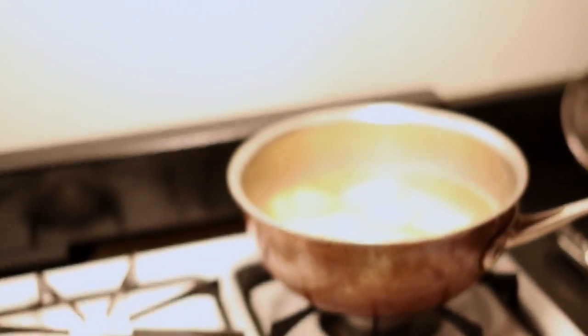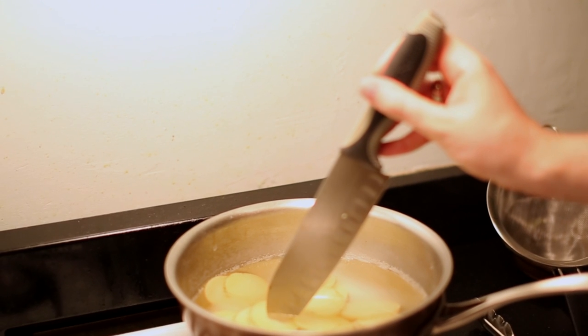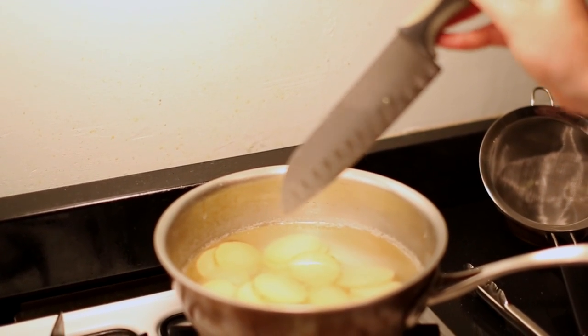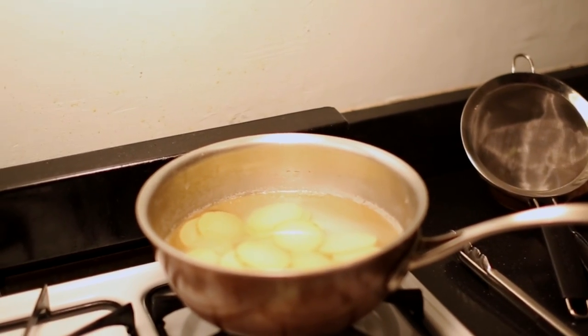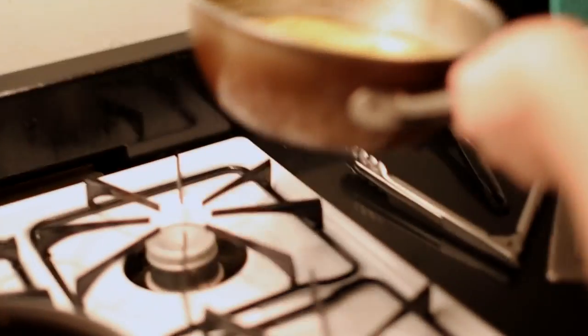Where potatoes are done parboiling is if your knife can easily sink into them, but it doesn't crush them. Just kind of easily slips in there. So then once your potatoes are done, we're going to strain them and we'll just set them aside here.